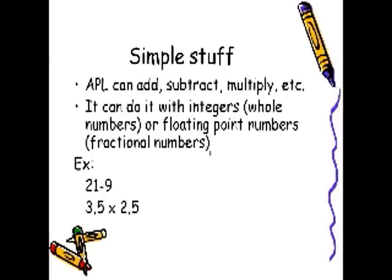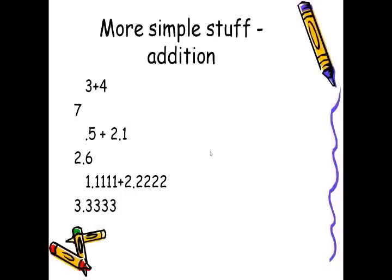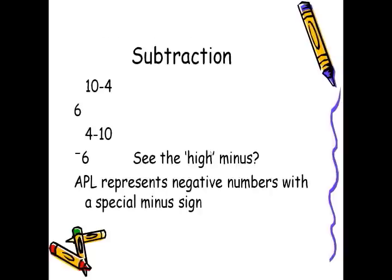Or, we can add two numbers, like 3 and 4, 0.5 with 2.1, and even more complex expressions. We can subtract numbers. 10 minus 4 is 6. 4 minus 10 is minus 6. But look,